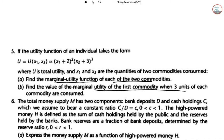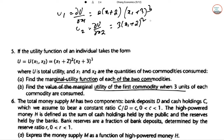Very similar. So U1, del U del x1, so 2 times (x1 plus 2x2 plus 3) cubed. U2 is del U del x2, 3 times (x1 plus 2) squared (x2 plus 3) squared. So this is the part, and this is the a part.